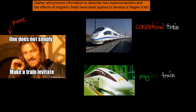Which is actually half correct and half not correct. We also have to talk about in this video how it's possible to make a train levitate, especially a Maglev train. The dot point itself says: gather and process information to describe how superconductors and the effects of magnetic fields have been applied to develop a Maglev train. So you have to actually be able to describe how this is possible - how we can make a train levitate.